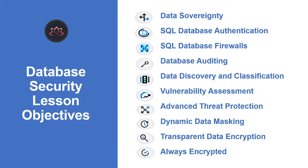We talked about data sovereignty in the previous episode, so that is similar and applicable to this episode as well. If you have not watched and don't know about data sovereignty, I would encourage you to watch the previous episode. We will start with understanding what is SQL Database Authentication and how can you implement SQL Database Firewalls, Database Auditing, etc. Then we will learn about data discovery and classification and how you can view and access the vulnerability assessment. How can you turn on advanced threat protection? Other topics we discuss are dynamic data masking, transparent data encryption, and always encrypted.